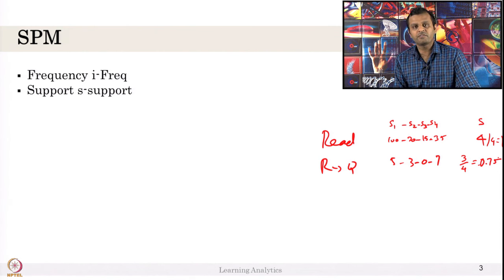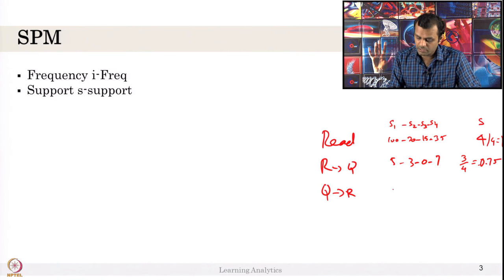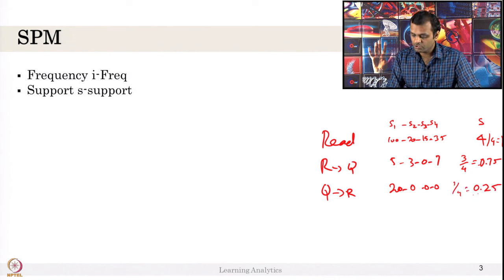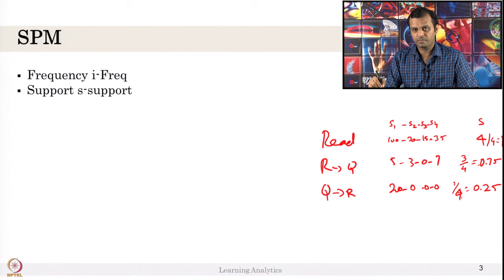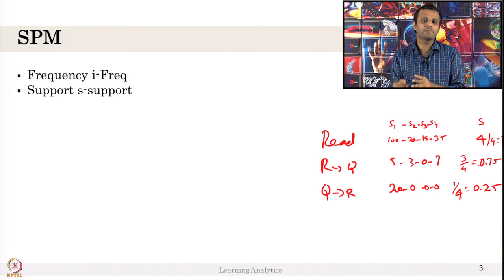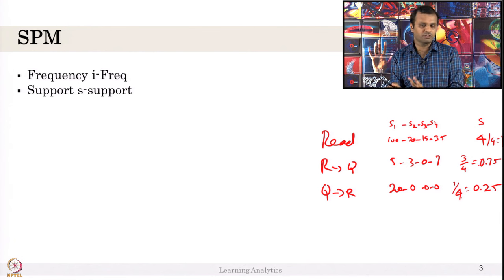For example, if I identify a pattern 'quiz to read' and it occurred 20 times for one student but zero times for the other three, it is very interesting — but only one student has it. Do you want to consider this pattern in your analysis? That will be defined by the S support. When we run a pattern mining algorithm, it gives all possible combination of patterns. Which pattern we should use for inferences will be decided by these two metrics: how many times it occurred and how many students have it.